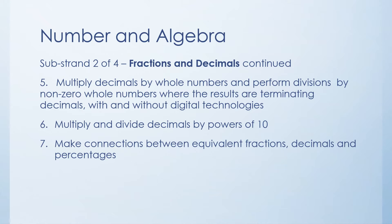The sixth content descriptor is multiplying and dividing decimals by powers of ten. So it's really just about how you move the decimal place when you're multiplying or dividing by numbers that begin with one and have a number of zeros after it, such as ten, a hundred, a thousand and so forth.